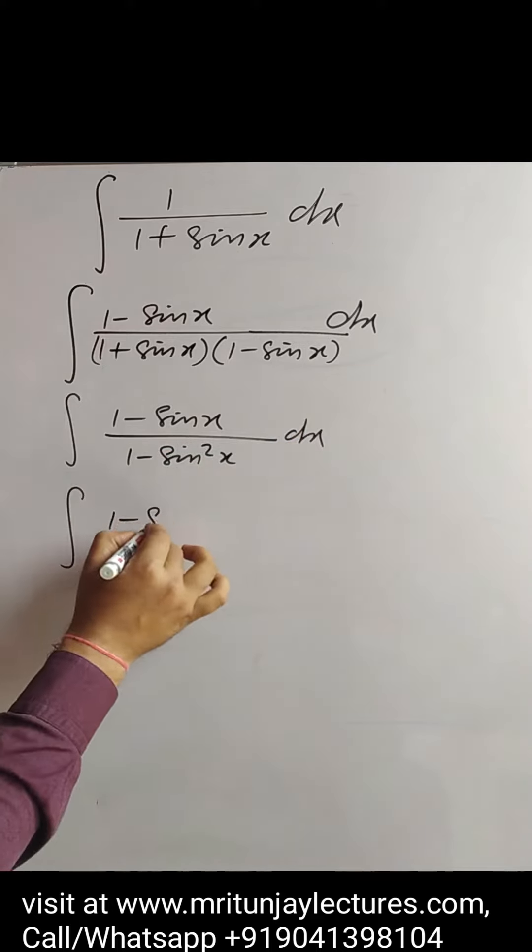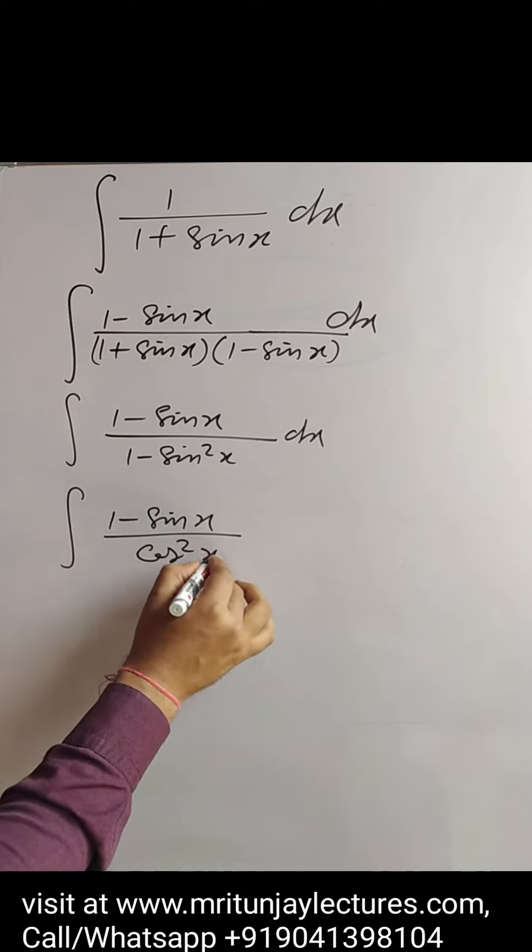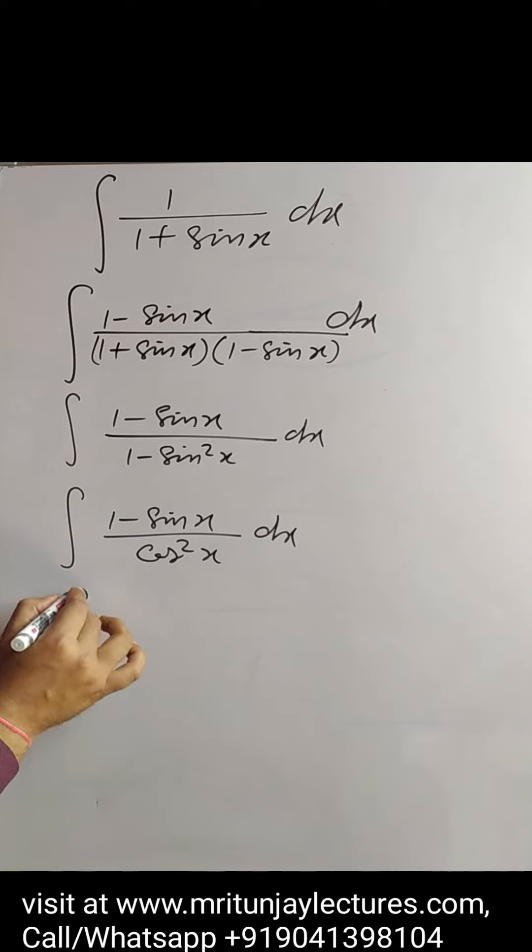So, simply that one is 1 minus sin x divided by cosec square x dx.